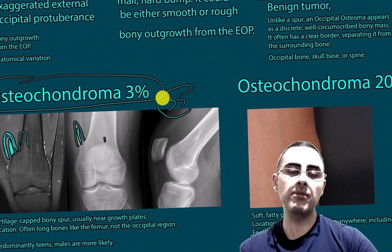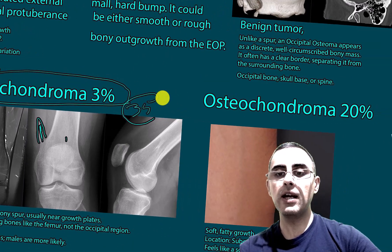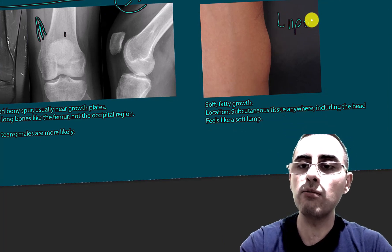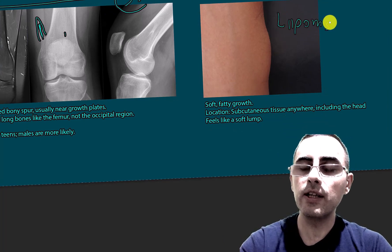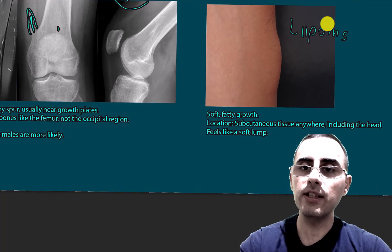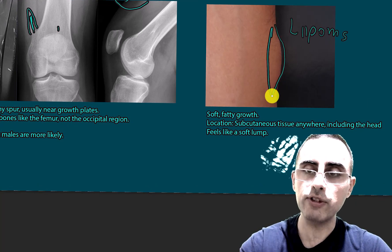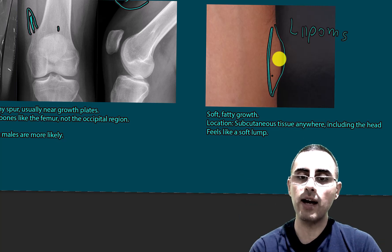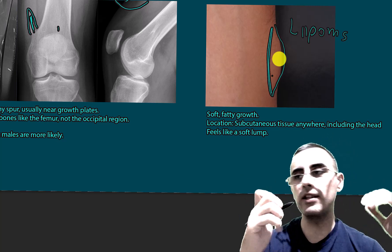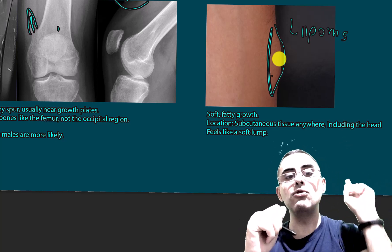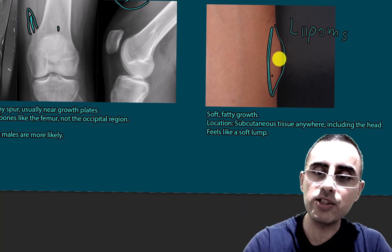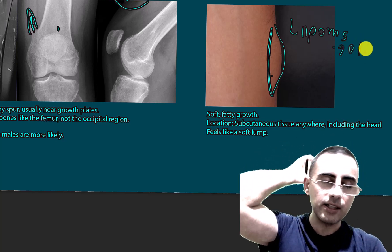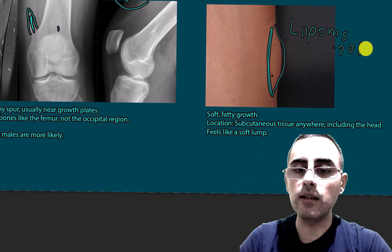Another cause can be lipoma — a benign tumor of fat tissue, representing subcutaneous fat tissue overgrowth. Lipoma feels soft when touched, which distinguishes it from bony overgrowths. If a person reports a hard bump, it is usually bone overgrowth rather than lipoma. However, lipoma is generally common, so there is still about a 20 percent probability that what seems hard is actually a lipoma.